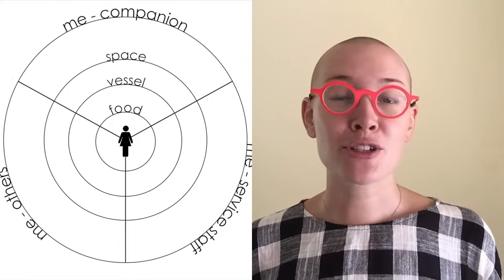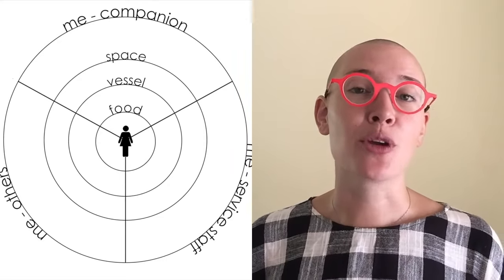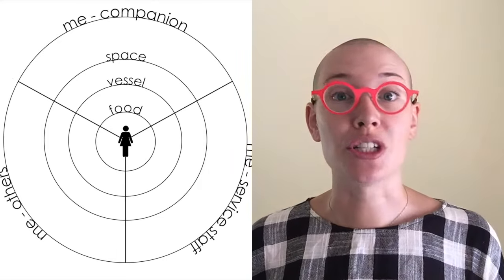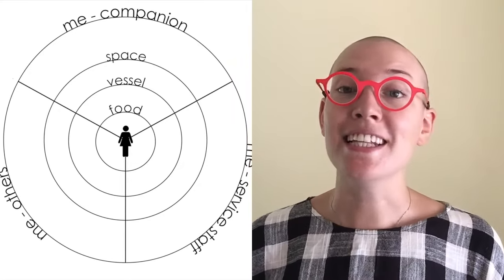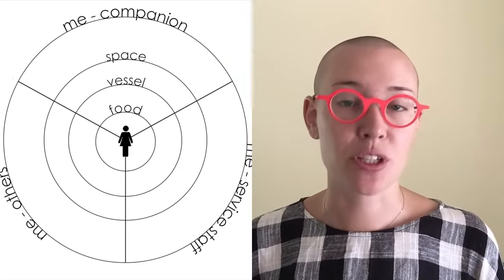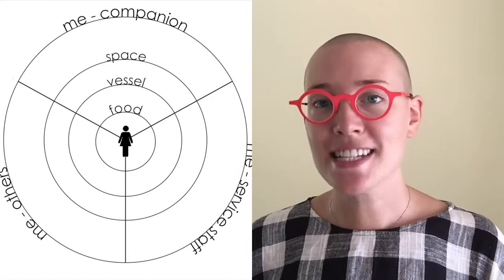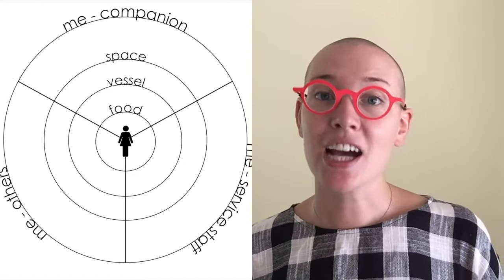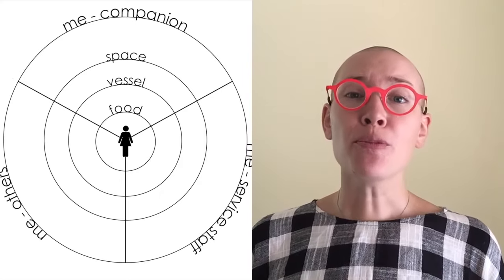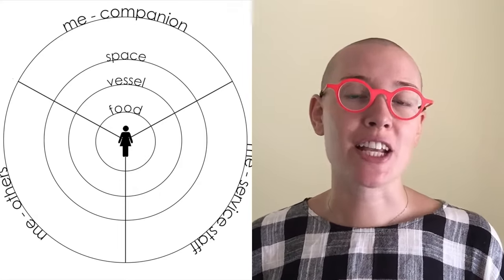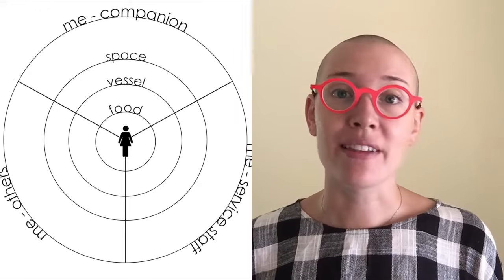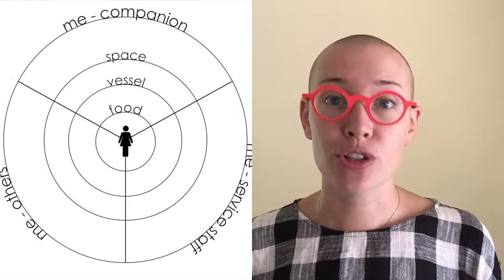This type of information, by the way, can be found by looking for food psychology or food sociology studies. The reason why the interaction circle is the very last outside is because I can design any aspect inside — space, vessel or food — to purposefully change the dynamics between the person and the companion, the others or the service staff.